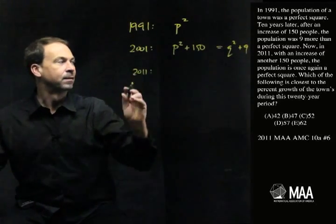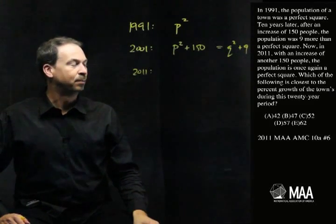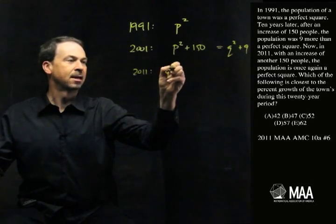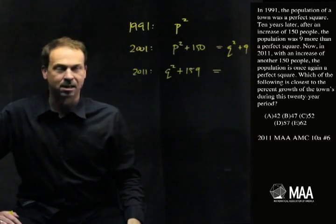10 years later, 2011. Now, with an increase of another 150 people, the population is another perfect square. All right. So we've got Q squared plus nine plus another 150. So it's Q squared plus 159. Apparently, it's another perfect square number.